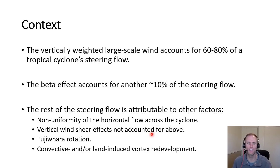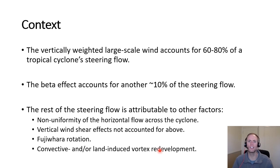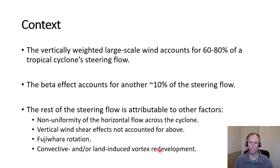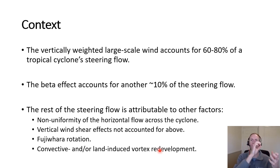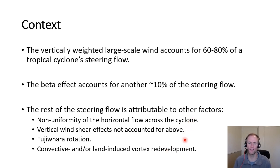There are also other effects: convective and land-induced vortex redevelopment. For example, vertical wind shear can focus ascent downshear, concentrating heating there and causing cyclonic rotation to redevelop in that region, with the low-level center jumping to that location. Similarly, mountainous terrain can favor convection on one side of a mountain, or cause the cyclone to move around the terrain rather than over it. These factors are important in certain cases but too complex to describe here; we'll focus on the first three.